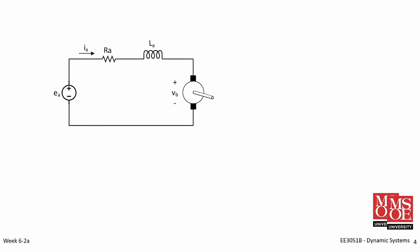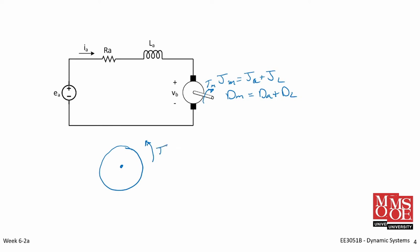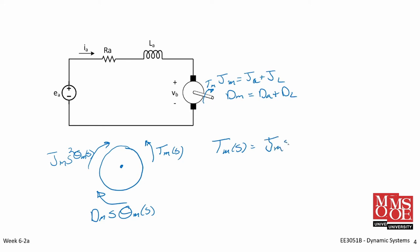Now let's look at the mechanical equations. Recall that the total inertial mass J sub M equals J sub A plus J sub L, and D sub M equals D sub A plus D sub L. The motor applies a torque T sub M to the total load. Doing a free body diagram in the Laplace domain, we have an applied torque T sub M of S, a counter torque due to rotational mass J sub M times S squared times theta sub M of S, and a counter torque due to friction D sub M times S times theta sub M of S. This gives the equation: T sub M of S equals J sub M times S squared plus D sub M times S, all times theta sub M of S.